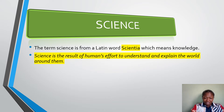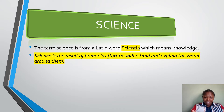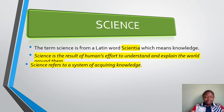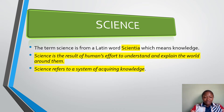Your effort to understand and explain why a green t-shirt shows green in light is science. The second explanation: science refers to a system of acquiring knowledge.